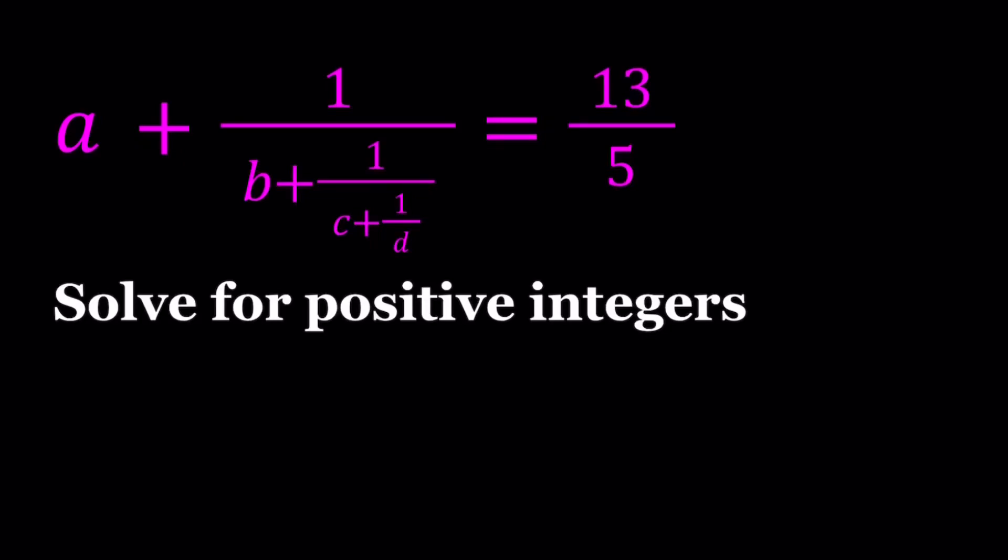Hello everyone. In this video, we're going to be solving a continued fraction equation for positive integers. We have A plus 1 over B plus 1 over C plus 1 over D, kind of like a ladder, equals 13 over 5, where A, B, C, D are all positive integers.